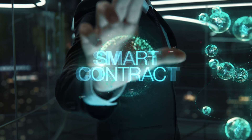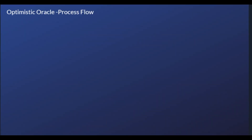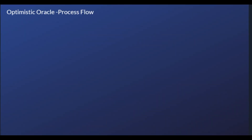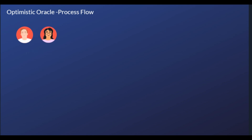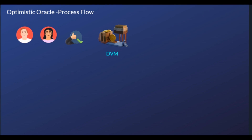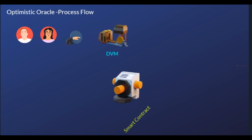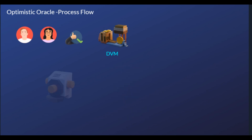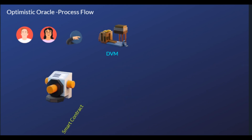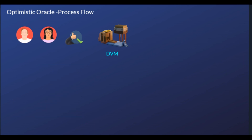When it comes to governance, UMA token holders have two responsibilities: to vote on the price of an asset when a request is given to the DVM, and to vote on changes and upgrades to the UMA protocol. Regarding these changes, UMA token holders are able to introduce new assets via the token facility smart contract, remove existing smart contracts which are not being used, and even shut down smart contracts in cases of emergency.